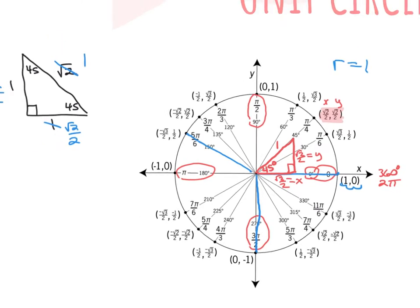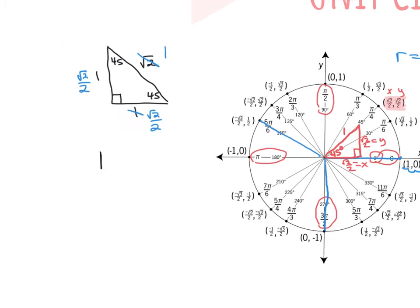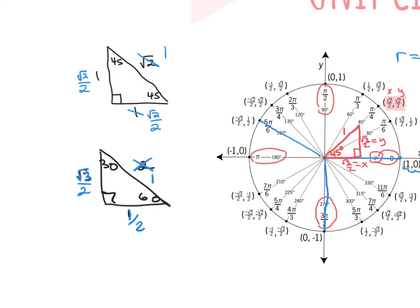Now for the 30-60-90, prior to this chapter, remember across from 30 was 1, across from 60 was root 3, and the hypotenuse was 2. Now in our unit circle, the hypotenuse is 1. The side across from the 30 is now 1 half, and this is now root 3 over 2. So the sides have changed on my special right triangle because now my hypotenuse, or my r length, is 1 — because it's a unit circle. But if you memorize the coordinates, you just have to look at them.